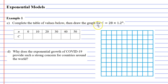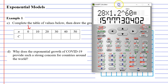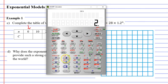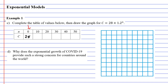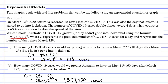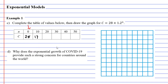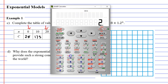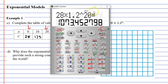Question C says: complete the table of values below, then draw the graph for C equals 28 times 1.2 to the power of N. In the first row where N is zero: 28 times 1.2 to the power of 0 gives us 28. We already know when N is 10 we got 173 cases from question A. Moving to the third row, when N equals 20: 28 times 1.2 to the power of 20 gives us about 1073 cases.